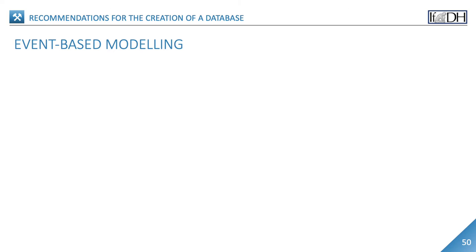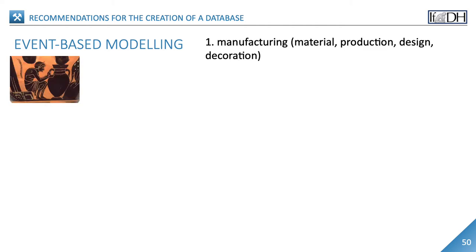The real strength of the LIDO scheme, however, lies in its event orientation. Here, the information on the collection object is assigned to an event — that is, one or more things that happened in the life of the object. A Greek amphora, for example, goes through many stages in its long life at which data occur. The first event is production: data on the material, the production, the shape or design, and the decoration are assigned to it. The place of this event is a potter's workshop. It leaves this place with a second event — trade or sale — which may have taken place at the market, in a shop or at the harbor.